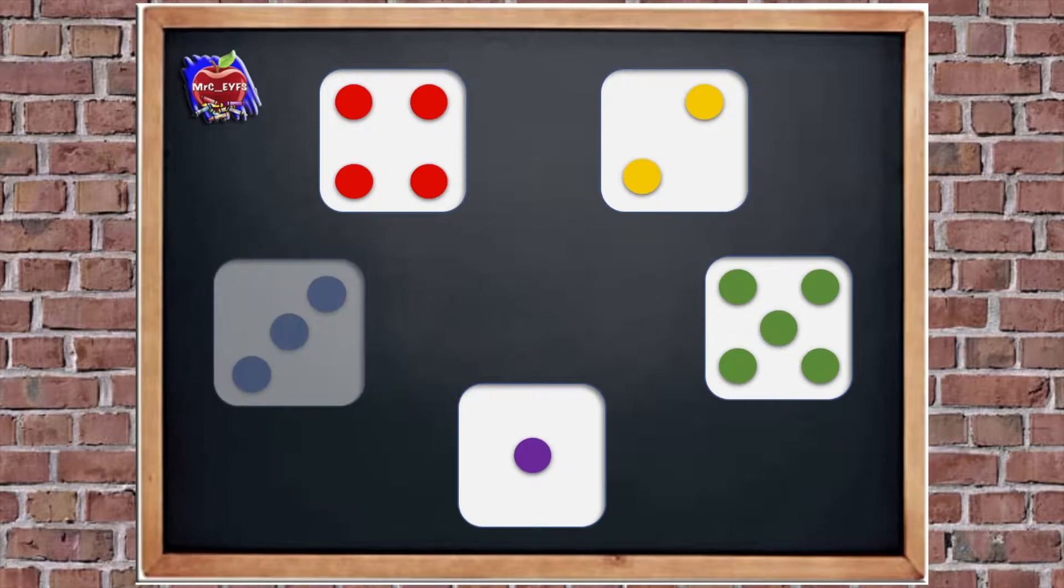What about the blue dice? Yeah, there's 3. Again, we don't need to count them. We can just look at them and see that that pattern is 3. What about the purple dice? Yeah, that's 1. That's an easy one. We can see that. And the last one, what about the green dice? Yeah, that's the pattern of 5. So we're going to use these sorts of patterns today. And when you just recognise a pattern without counting them, that's called subitising.